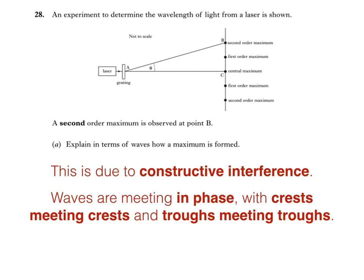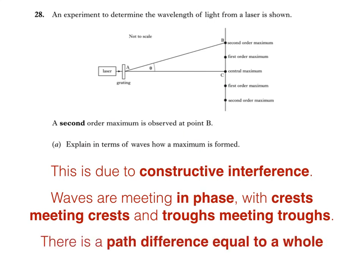The path difference is between the second slit and the maximum. When the path difference is equal to a whole number of wavelengths, this results in constructive interference and a maximum being produced. We can use the same explanation here — a path difference equal to a whole number of wavelengths. The big difference with using a grating rather than Young's double slits is that there would be far more coherent sources of light, so the interference pattern would be brighter. The slits would also be very close together, which would result in the maxima being further spread out.